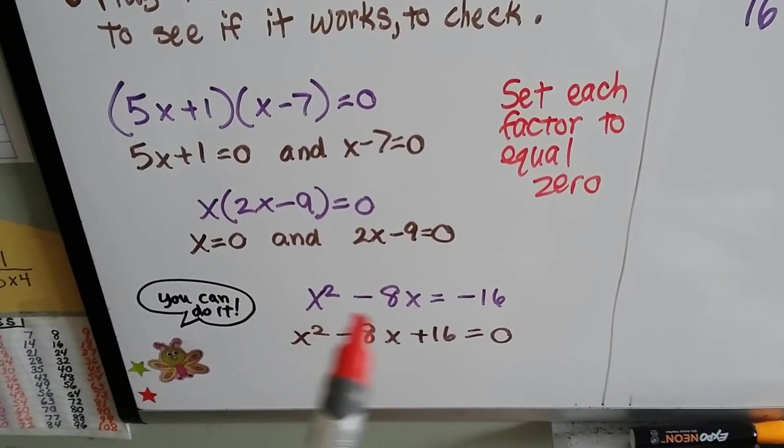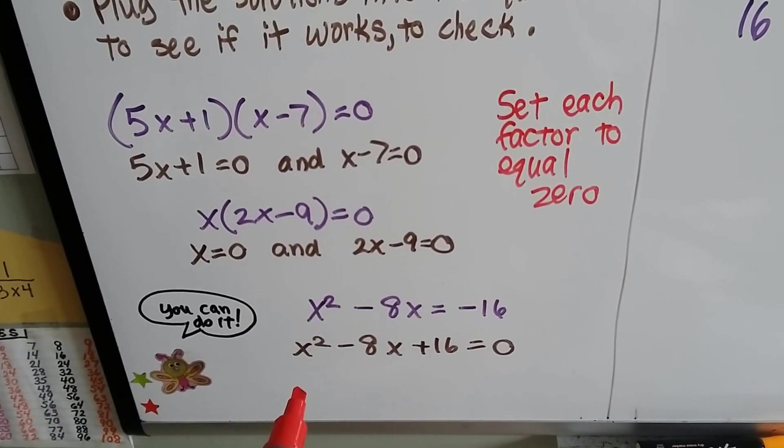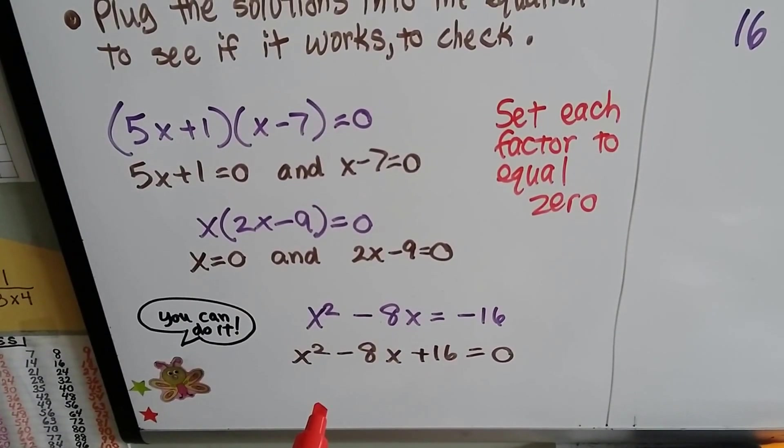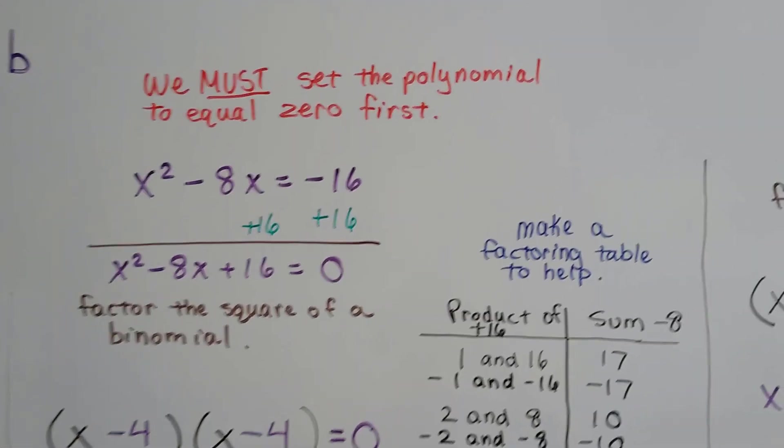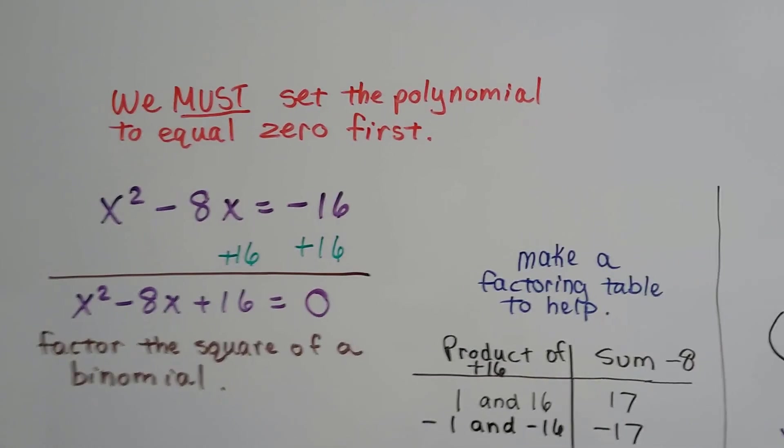And if we have something like this, well, then we just have to factor the square of a binomial and then set each to equal zero, and I'll show you. So we must set the polynomial to equal zero first.